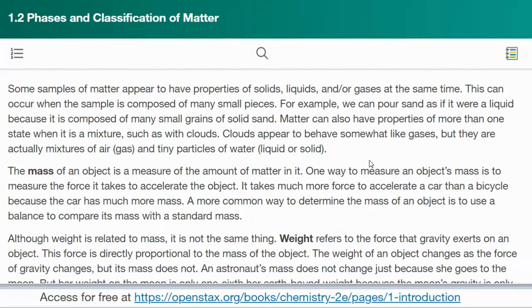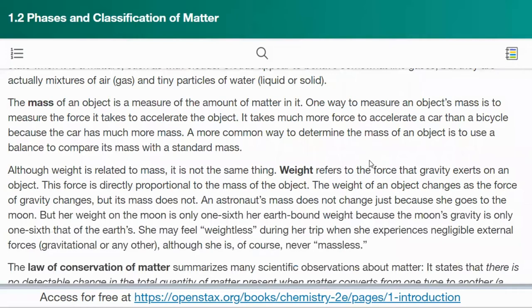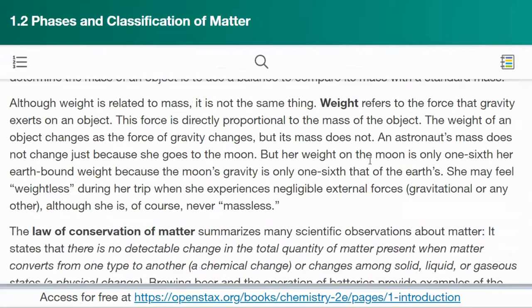The mass of an object is a measure of the amount of matter in it. One way to measure an object's mass is to measure the force it takes to accelerate the object. It takes much more force to accelerate a car than a bicycle because the car has much more mass. A more common way to determine the mass of an object is to use a balance to compare its mass with a standard mass.